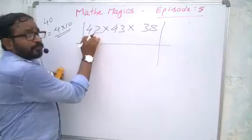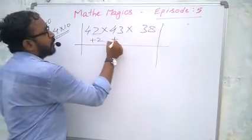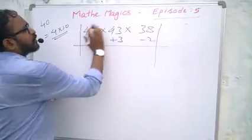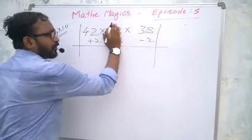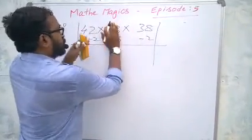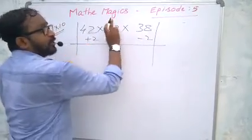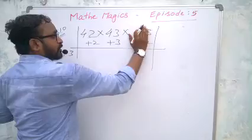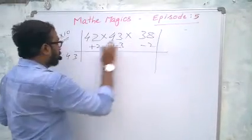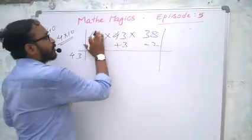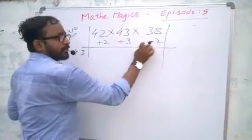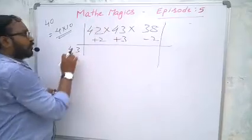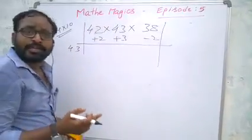Here it is more than 40, that is why here write plus 2, here plus 3, here minus 2, as usual. And now close anyone, either this or this. If you close this one, we have to add these two numbers: plus 2 minus 2 becomes 0, add 0 to the 43, we will get 43 itself. For example, if you close this one, 2 plus 3 is 5, add 5 to the 38, we will get 43. If you close this one, add these two numbers, plus 3 minus 2 becomes plus 1, that plus 1 should be add to 42, we get 43.